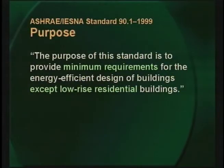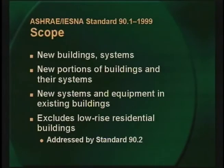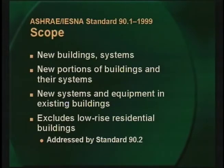The purpose of the standard is to provide minimum requirements, and it does not include low-rise residential dwellings such as family homes or duplexes. Its scope shows that it applies not only to new buildings, but also to additions and alterations. The mechanical section covers both mandatory and prescriptive requirements. Mandatory requirements include equipment efficiency, controls, documentation, labeling, and many other aspects of mechanical systems. Prescriptive requirements of Standard 90.1 include economizers, fan power limitations, hydronic system design and control, and related to today's subject, a simultaneous heating and cooling limitation.